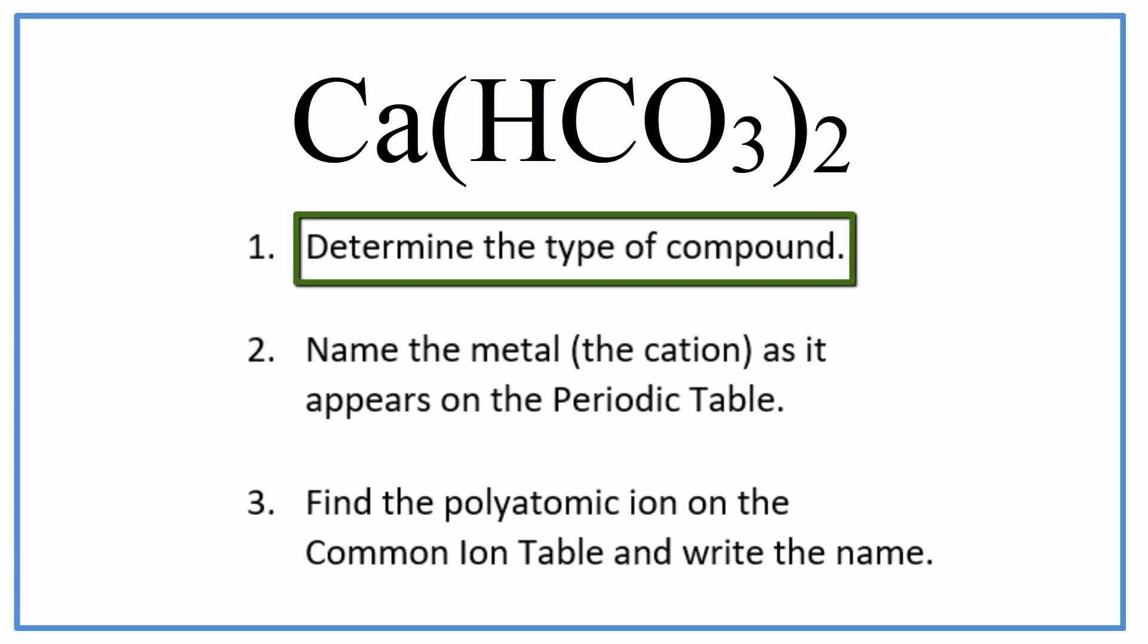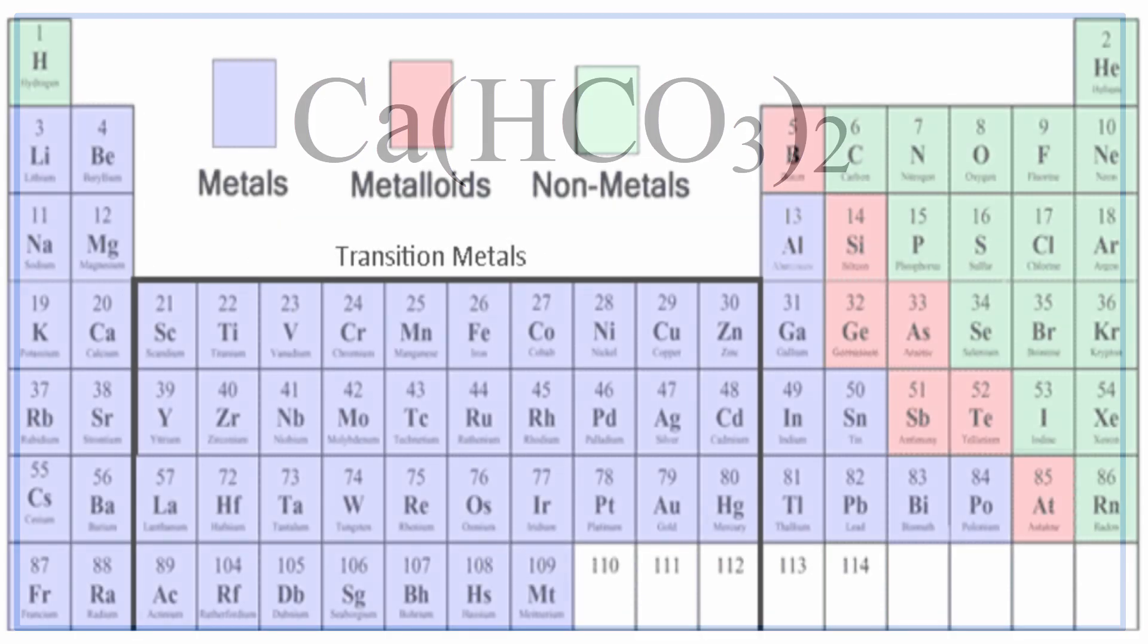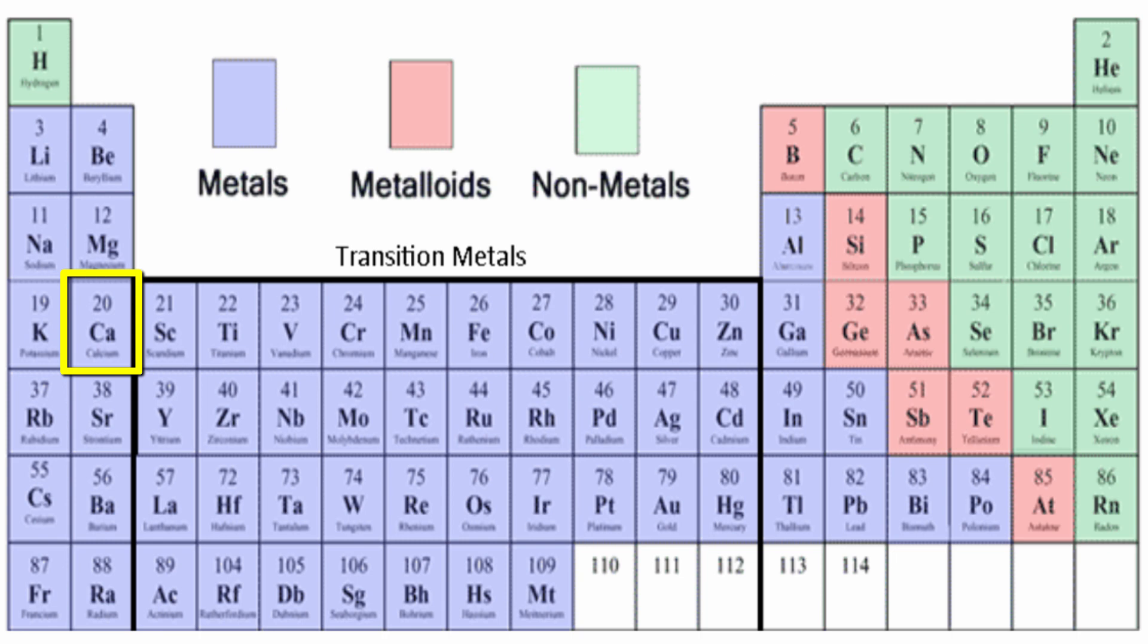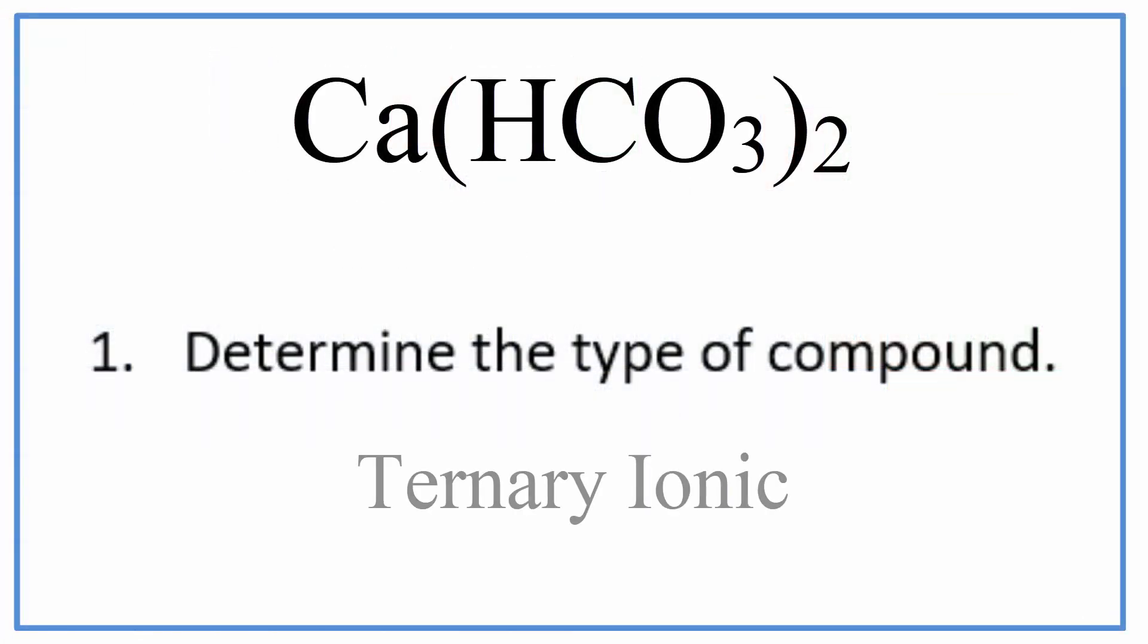First, we need to be sure of what type of compound we have. On the periodic table, we can see that calcium's a metal, and then we have that HCO3. Those are all non-metals, and they make up a polyatomic ion. That makes this a ternary ionic compound.